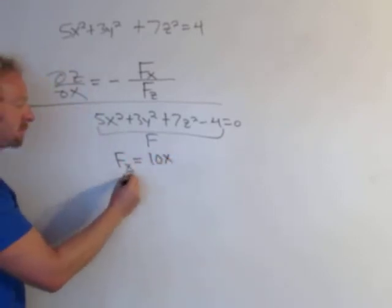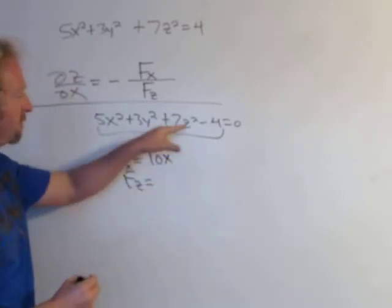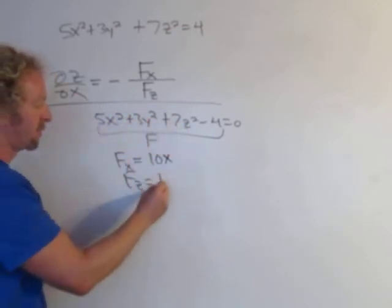And then f_z, well f_z should be 14z, right? Because everything else will be zero. So 14z.